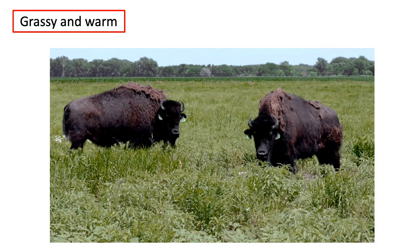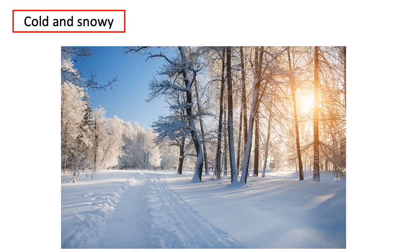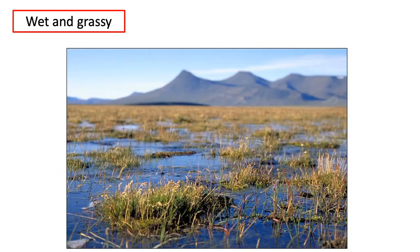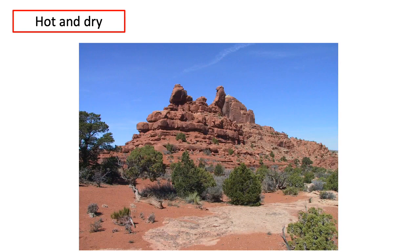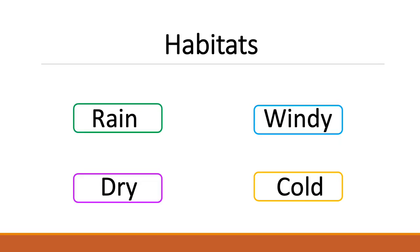Now we will see different kinds of habitats. The first one is grassy and warm, the second one is cold and snowy, the third is wet and grassy, and the fourth is hot and dry. There are many kinds of habitats — some have lots of rain, some are dry, some places are windy, and others are cold.